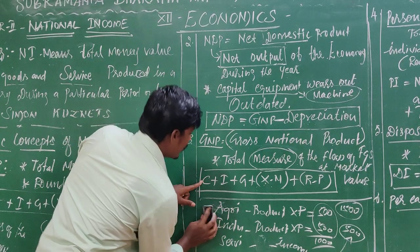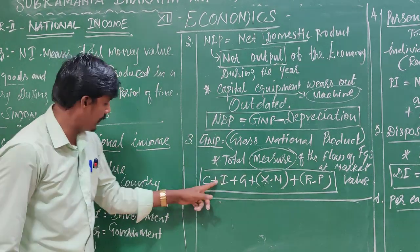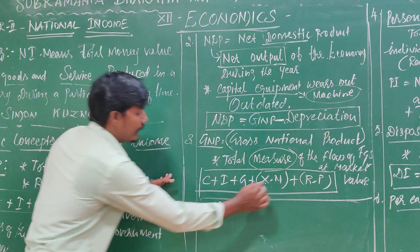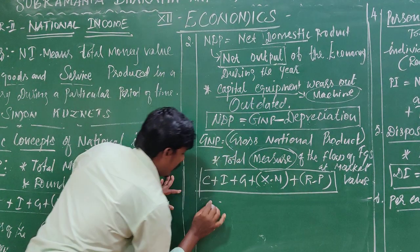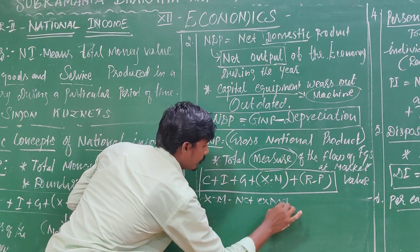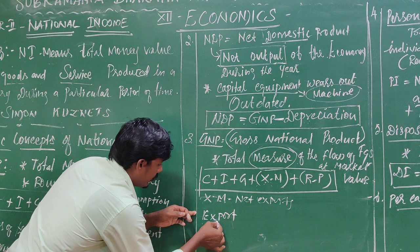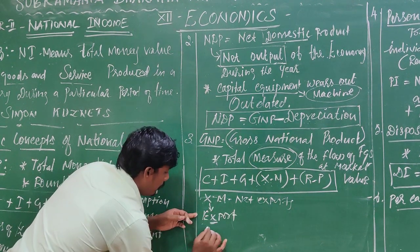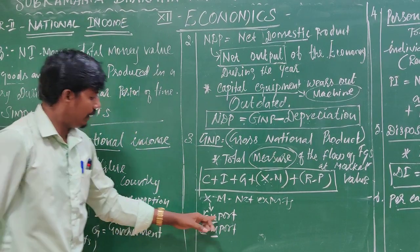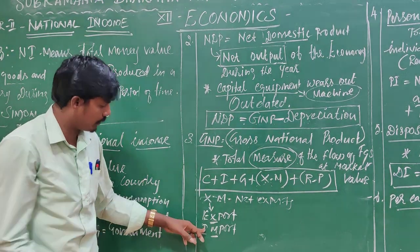In the formula: C means Consumption Expenditure, I means Investment Expenditure — already explained in GDP — plus G, which is Government Expenditure. Here, X minus M: X means export, M means import. The net export can be positive or negative depending on whether exports exceed imports or vice versa.